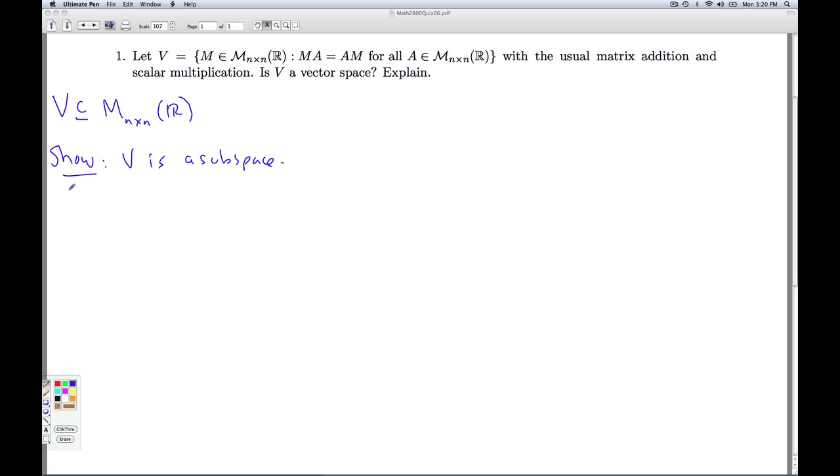And how do I show something's a subspace? Well, we can apply the subspace criteria. Number one, V can't be empty. And in particular, we've proven that zero then has to be in V. And the second thing is it has to be closed under linear combinations. So if U and V are in V and alpha and beta are real numbers, then the linear combination alpha U plus beta V also has to be in V. So it's non-empty and closed under all linear combinations.